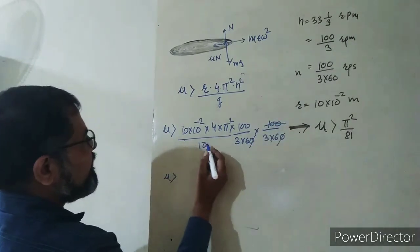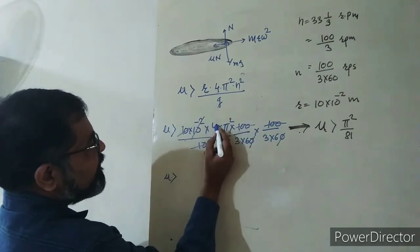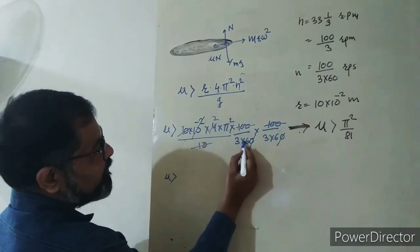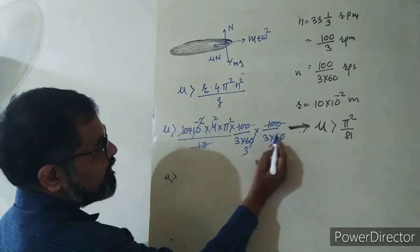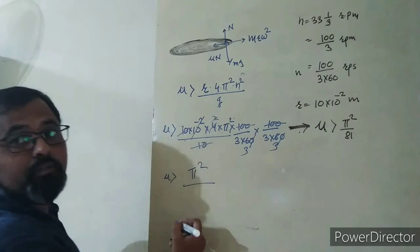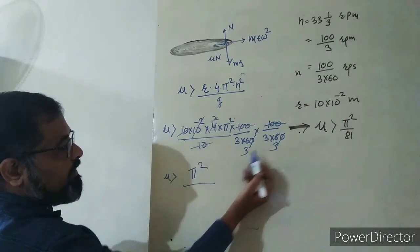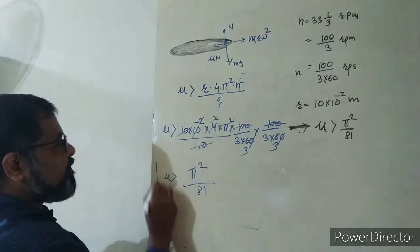...this zero and zero cancel, this 10 goes there, and 3 goes here. So we get π² on top, and 3 × 3 = 9, and 9 × 9 = 81 on the bottom.